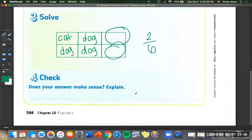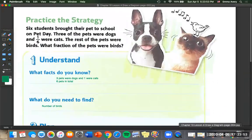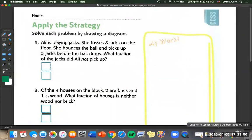And we can check our answer just like we did on the other one, but we'll do this one with addition. So one cat plus three dogs plus two birds equals six total. Okay, on to the next page. So now we're going to apply the strategy. We're going to solve each problem by drawing a diagram.